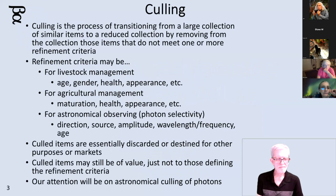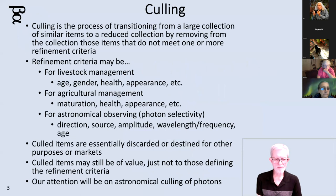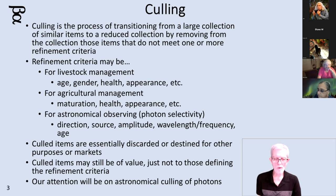Here's the reason why I use the word culling. Culling is basically when you have a large collection of things that are similar and you want to reduce that collection by removing items that don't meet some particular refinement criteria. It really comes from livestock management, agricultural management, but I'm using it in relationship to astronomical observing — what photons do I want to keep, record, observe, and what photons do I not want? The culled items may still have some value, just not to those defining the refinement criteria.